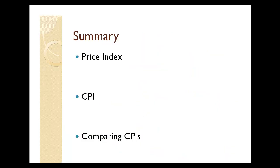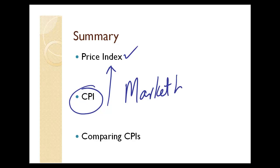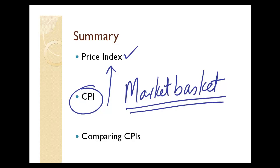To summarize: a price index like the CPI measures the price level, which is a weighted average of prices. The CPI is based on goods and services in the market basket, which are representative of what a typical household buys. We can use CPI values from different years — such as 1997 and 1998, or 2010 and 2011 — to calculate the percentage change in prices.